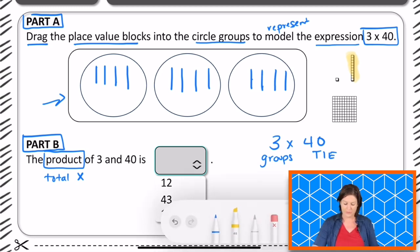Well, let's count them. We've got 10, 20, 30, 40, 50, 60, 70, 80, 90, 100, 110, 120.